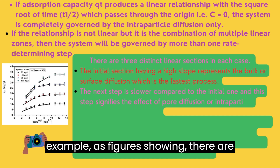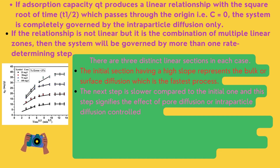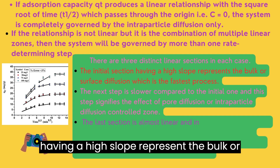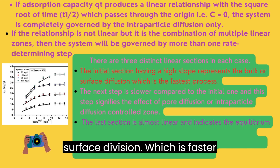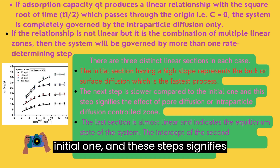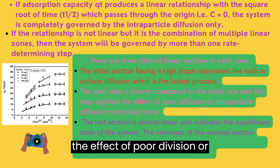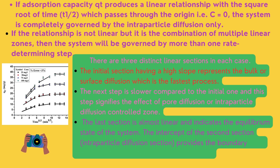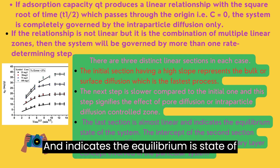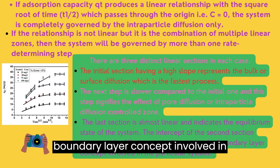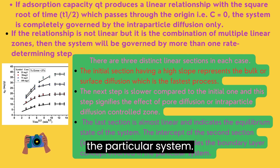For example, as the figure shows, there are three different linear steps. The initial section having a high slope represents the bulk or surface diffusion, which is a faster process. The second step is slower compared to the initial one and signifies the effect of pore diffusion or intraparticle diffusion control zone. The last one is almost linear and indicates the equilibrium state of the system. The intercept of the second section provides the boundary layer concept involved in the particular system.